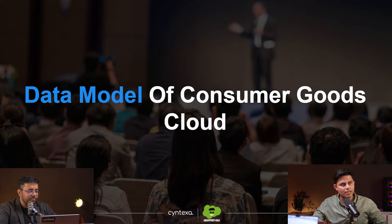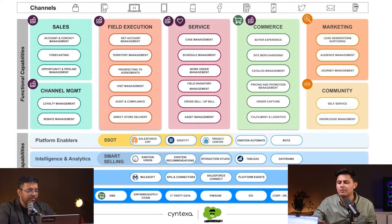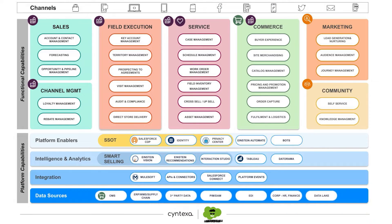Let's talk about the data model of Consumer Goods Cloud. At the bottom we have platform capabilities, at the middle layer we have the functional capabilities, and at the top we have different channels through which we can communicate or interact with our customers.